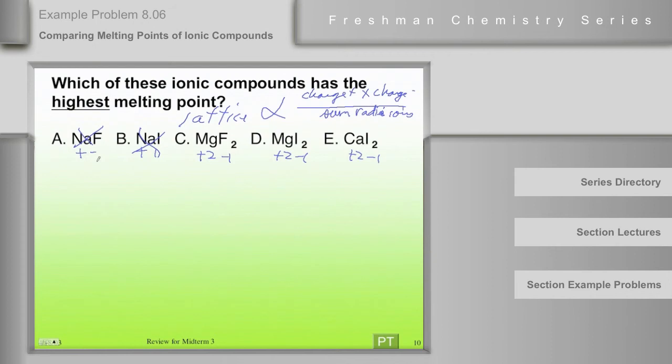So within that group, the charges are all the same. The numerator is the same for all of them. So then we look at the denominator. So we look at the radii of the ions, and the smallest sum of the radii will have the most favorable lattice energy.